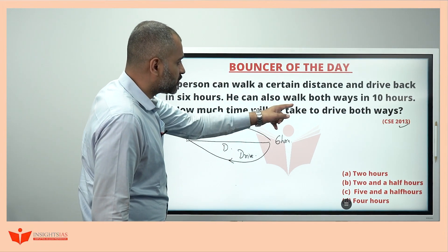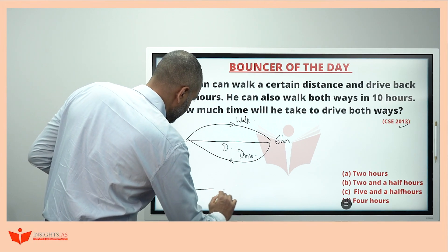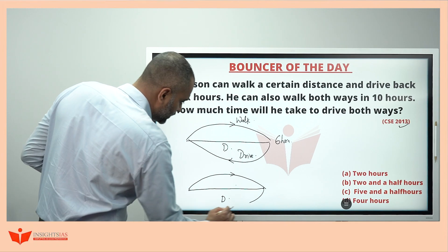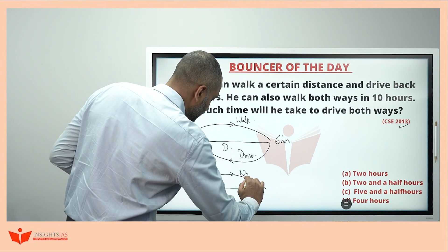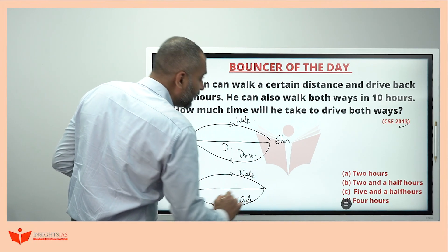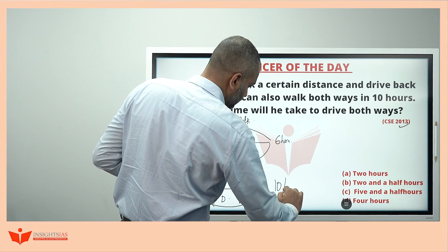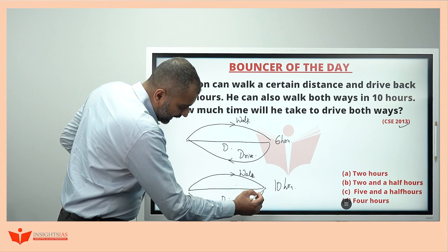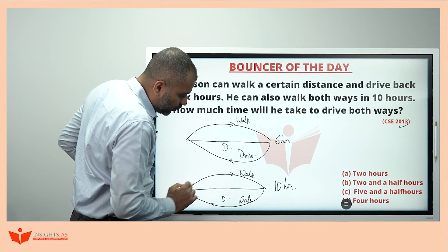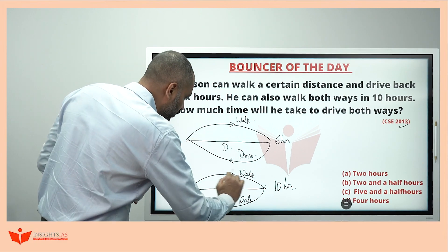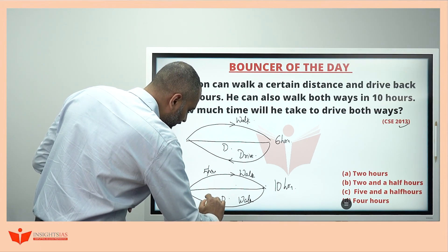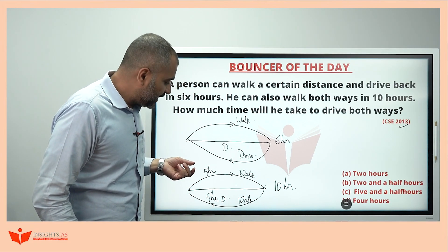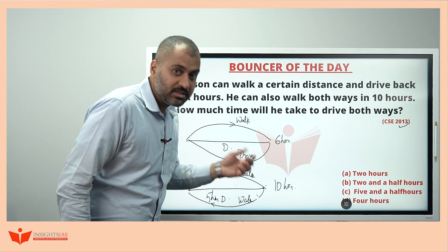Now, he can also walk both ways in 10 hours. If the same distance d, if he walks both ways, here also and this distance also, if he walks, here he is also walking, here he is also walking. He takes how much? 10 hours. If he walks this way and also this way, if he is taking 10 hours, he is going and coming back. Taking 10 hours means, for going, 5 hours, and coming back, 5 hours. That means, this person can walk from here to here, this distance in 5 hours.